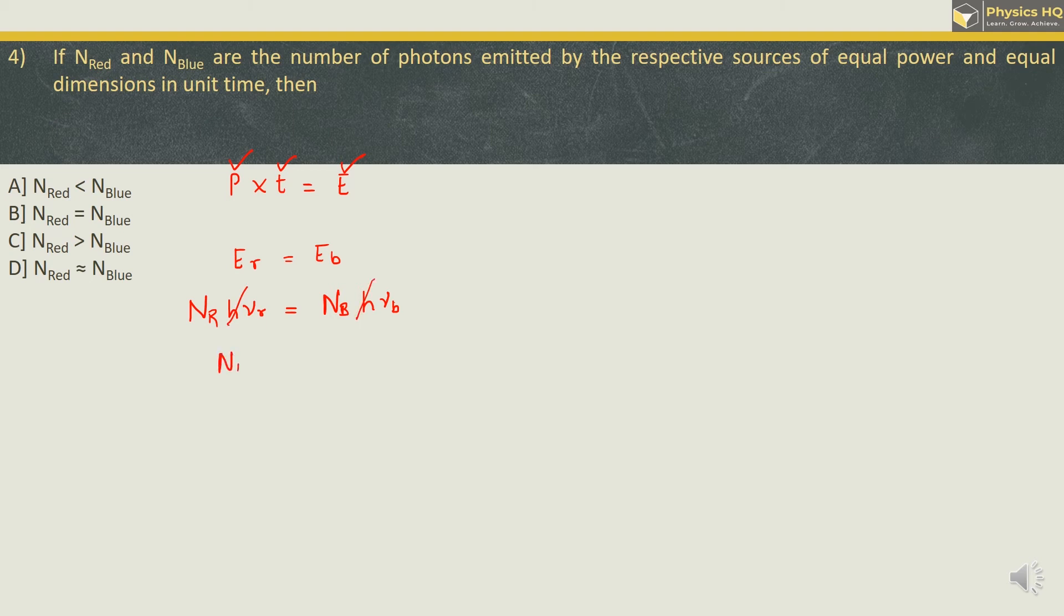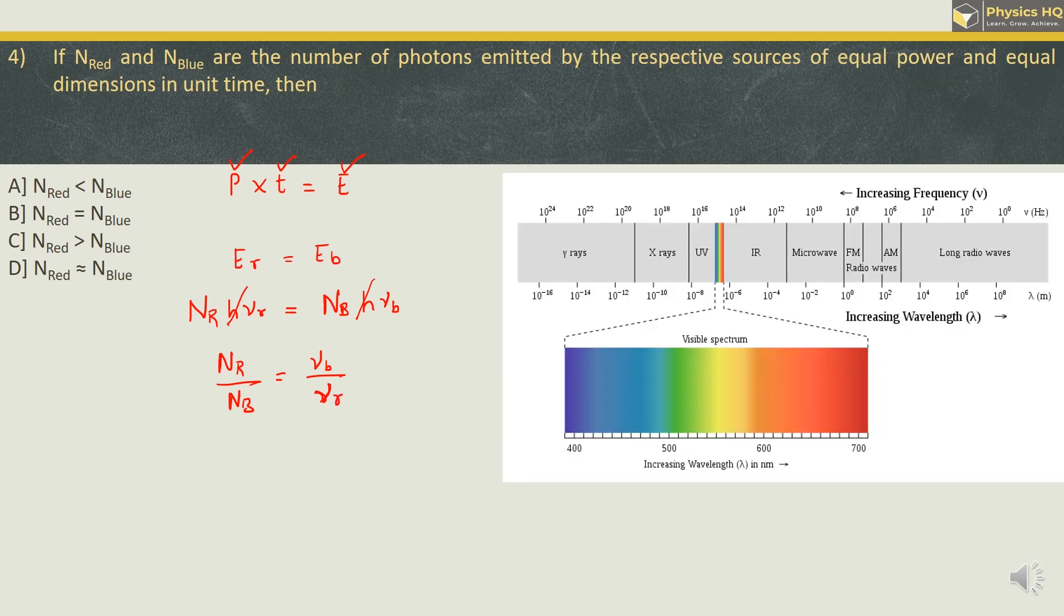We can cancel out Planck's constant h from both sides, and we can write n_r upon n_b. This is equal to frequency of blue source upon frequency of red source. If we check out in the spectrum given, we find that when we move from right to left, the frequency increases. So when we move from red to blue, the frequency increases. So what we see is frequency of blue color is greater than the frequency of red color.